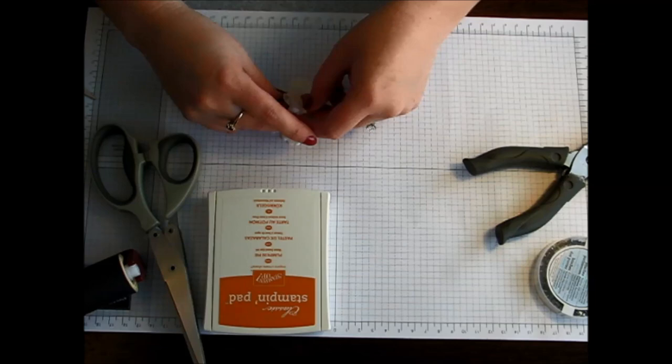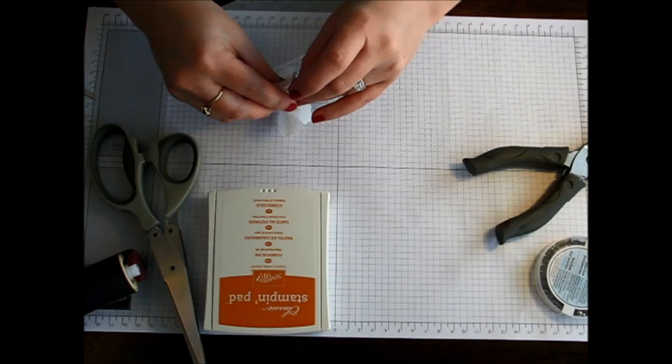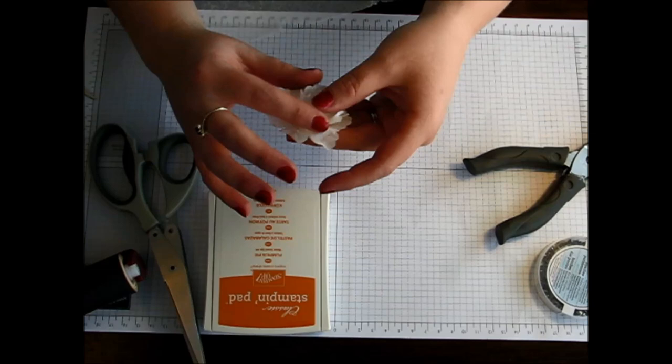You just keep pulling each layer up and scrunching. Once you get to your last one you'll also do the same with that one. Just scrunch it up so you kind of have this sort of look.